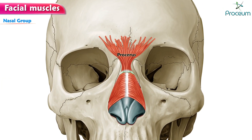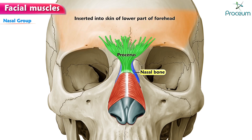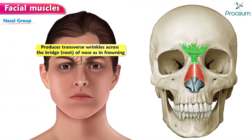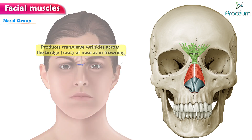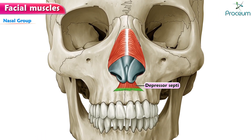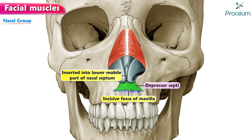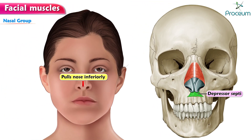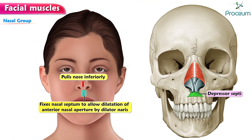Procerus: arises from the nasal bone and passes upward to be inserted into the skin of the lower part of the forehead. It produces transverse wrinkles across the bridge or root of the nose, as in frowning. Depressor septi: arises from the incisive fossa of the maxilla and is inserted into the lower mobile part of the nasal septum. It pulls the nose inferiorly and fixes the nasal septum to allow dilatation of the anterior nasal aperture by dilator naris.